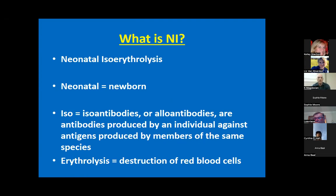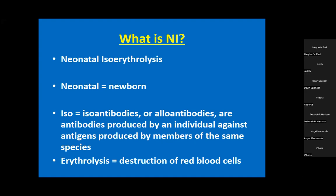Today's topic is neonatal isoerythrolysis - that's a mouthful, so people usually refer to it as NI. 'Neonatal' refers to newborn, and 'isoerythrolysis' means there are antibodies destroying red blood cells. 'Erythro' refers to red blood cells, 'lysis' refers to destruction, and 'iso' means the antibodies are produced by one individual against antigens present in another member of the same species.